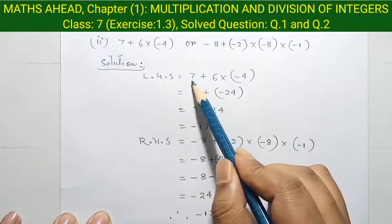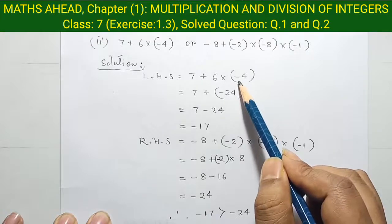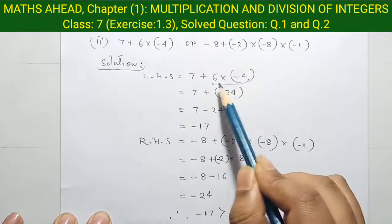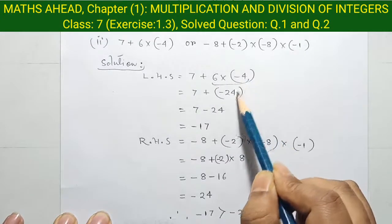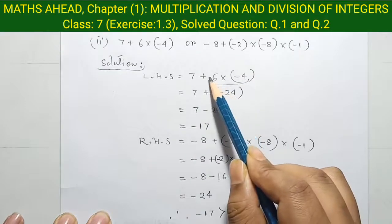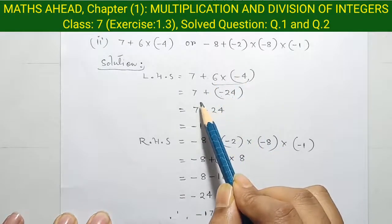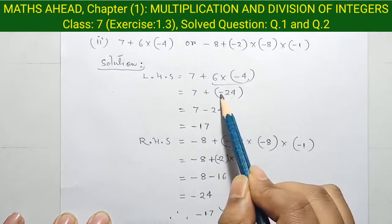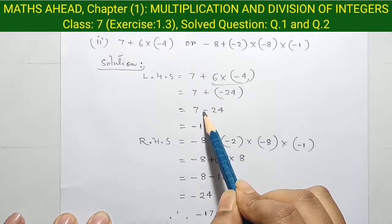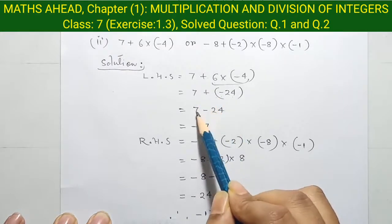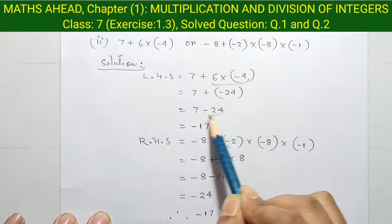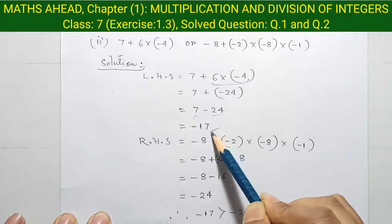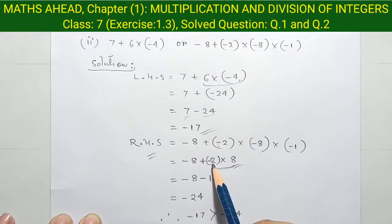Here, left hand side equals 7 plus 6 into minus 4. At first we solve this part: 6 into 4 equal to 24, and plus and minus became minus. When we open the bracket, this minus and this plus became minus. So when we subtract minus 24 from 7, we get the value minus 17.